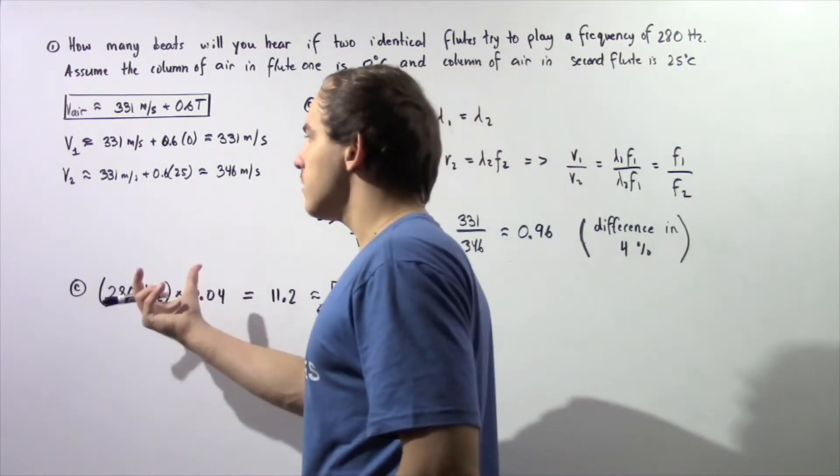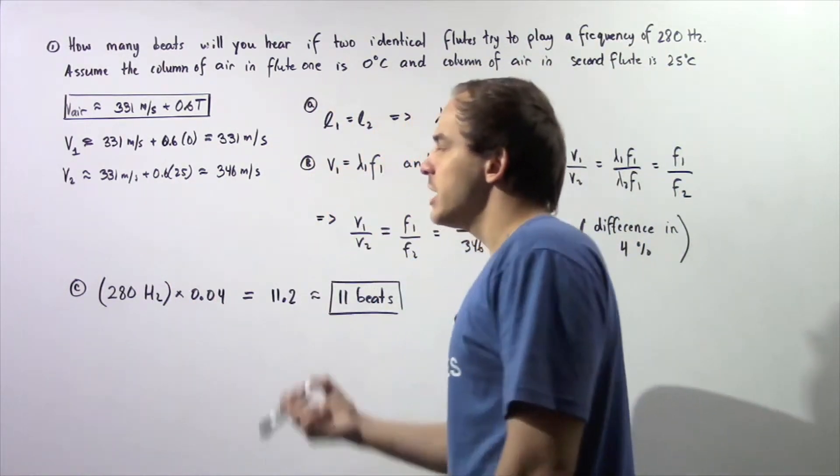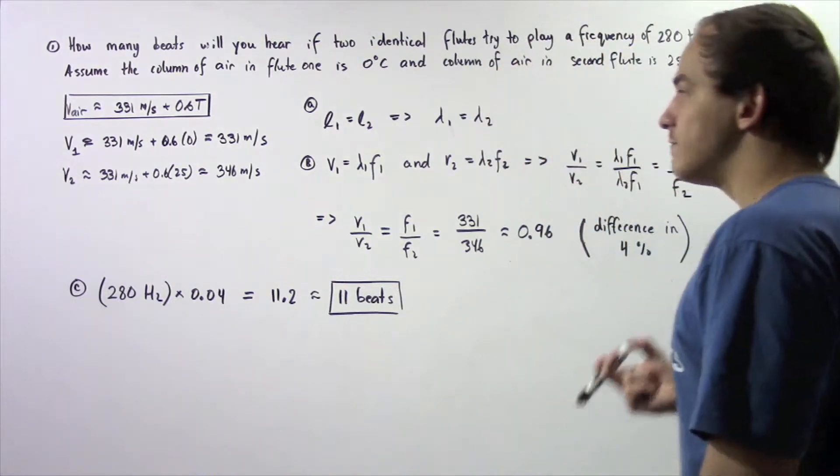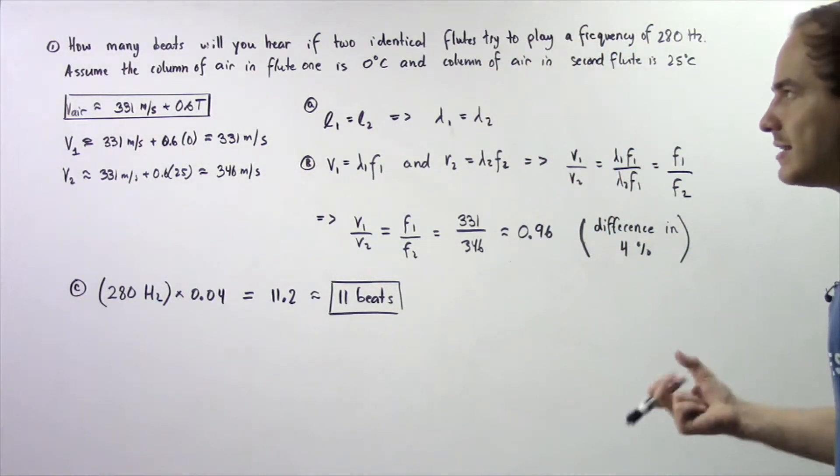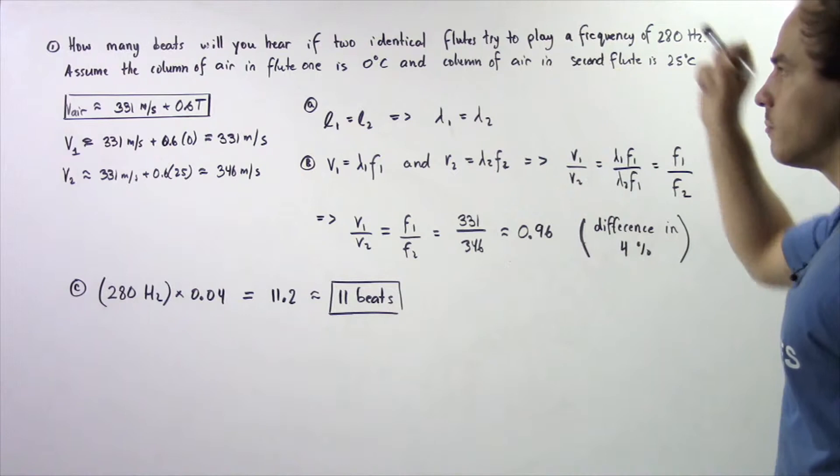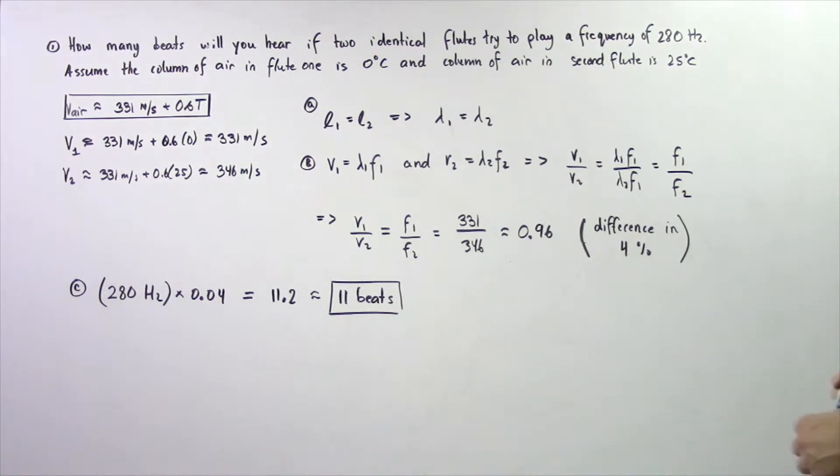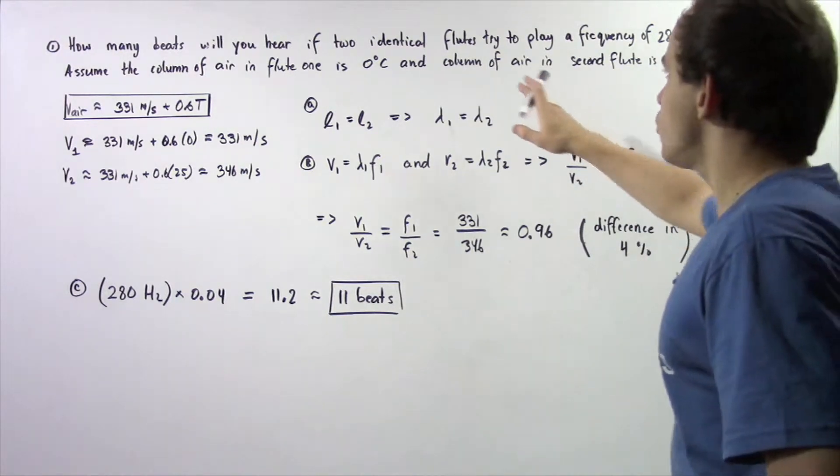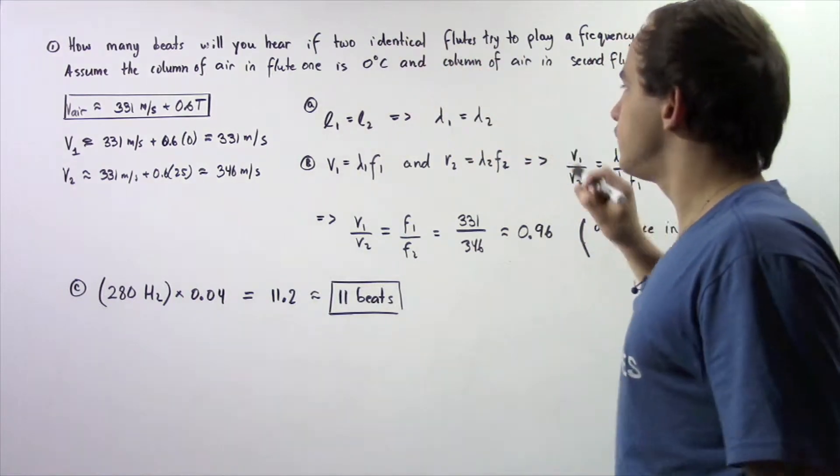So notice because of this difference in temperature, there will be a difference in velocity of the standing waves between flute number one and flute number two. Now, because we're dealing with two identical flutes,